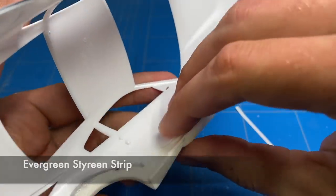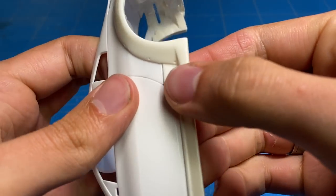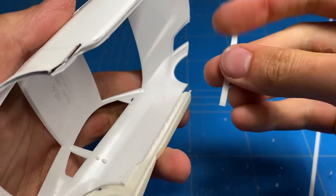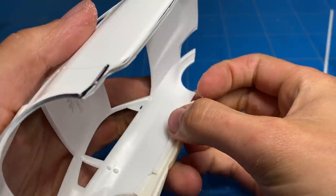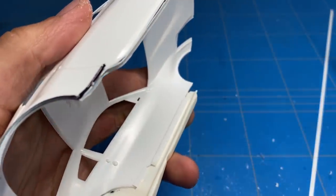On the inside it does need a little bit more reinforcement so I'm using some small styrene strips and adding that on there just to have it reinforced a bit better and stay in place permanently and be a bit more rigid.